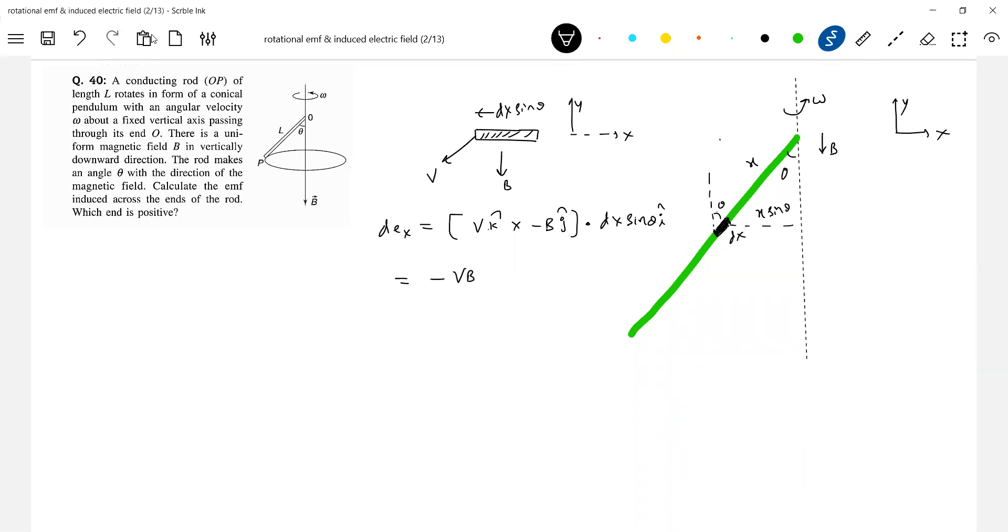This will be VB i cap dot dx sine theta i cap. So this will become minus VB sine theta into dx i cap. Okay, this is a scalar. I dot I will be, this is a dot product.